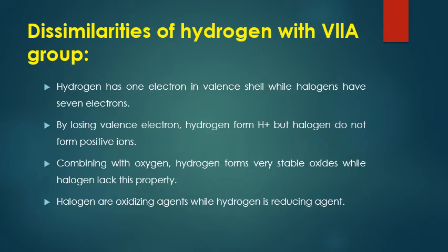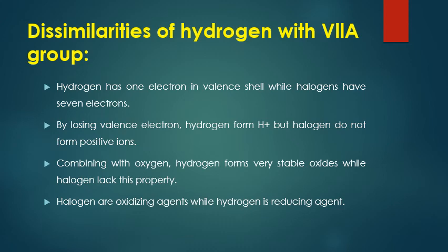Now the dissimilarities with Group 7A. First: hydrogen has only one electron in its valence shell, whereas halogens have seven electrons. Second: hydrogen can both lose and gain electrons — it forms ionic and covalent compounds — whereas halogens only gain electrons and form covalent compounds. Third: hydrogen combines with oxygen to form very stable oxides (like water, H₂O), while halogens do not readily form stable oxides. Fourth: halogens are oxidizing agents, whereas hydrogen is a reducing agent — hydrogen removes oxygen from compounds.